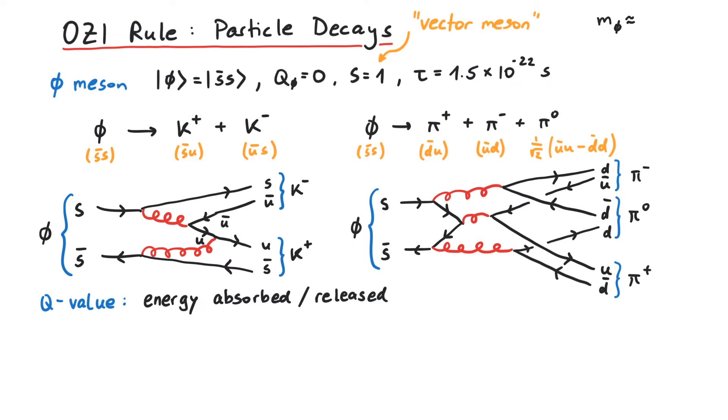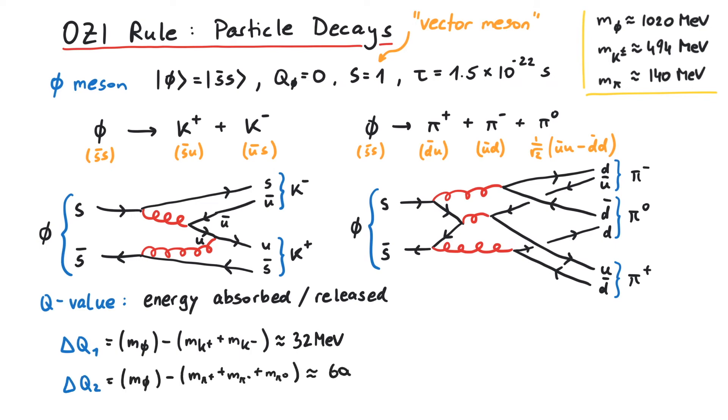The phi meson has a mass of about 1020 MeV. The charged kaons are at around 494 MeV, and the pions have a mass of approximately 140 MeV. Therefore, the Q-value of the first decay process is around 32 MeV, whereas the Q-value of the second process is around 600 MeV.